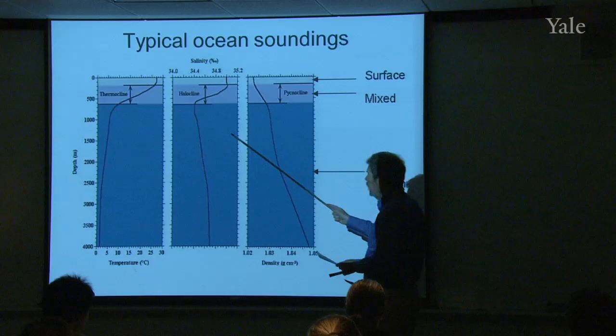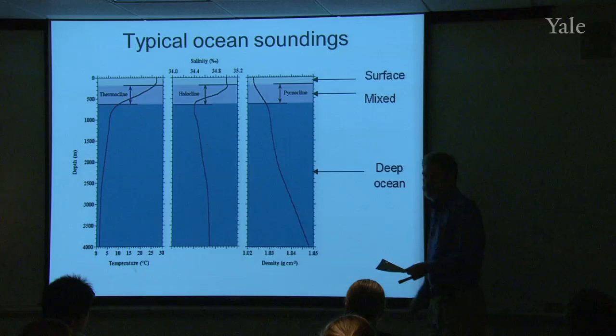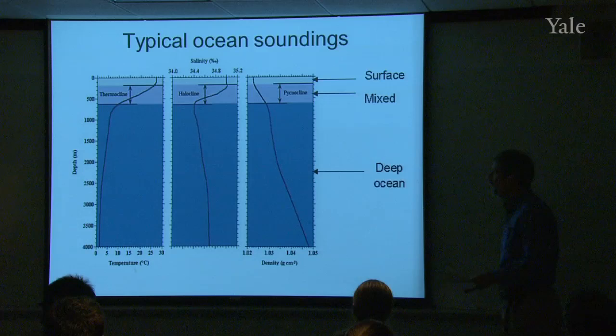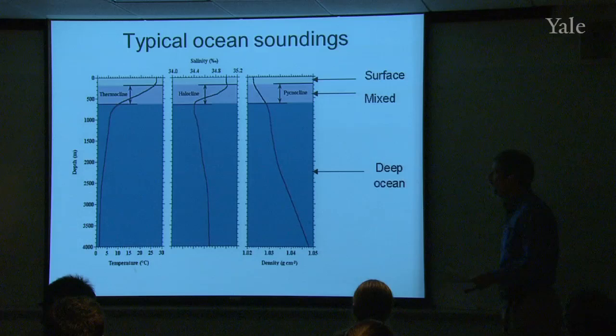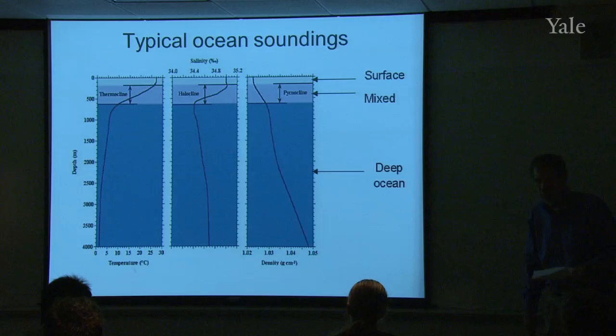Salinity is somewhat similar in that you can have strong gradients near the Earth's surface, but more uniform conditions below. In this case, it's saltier, then gets a bit fresher, then gets very slowly saltier below. But all was staying in this remarkably narrow range, between 34 and 35 and a half parts per thousand.